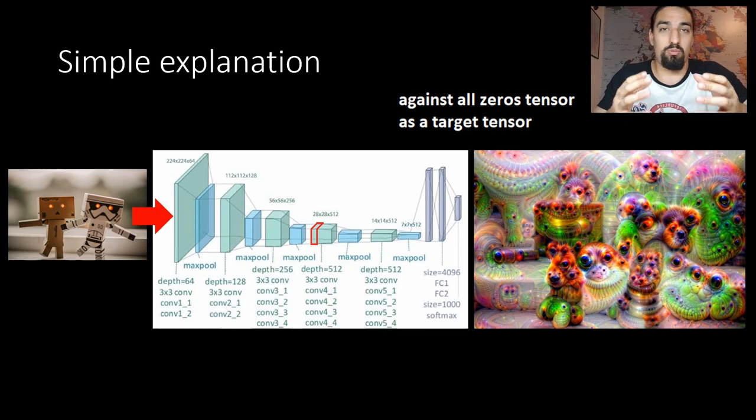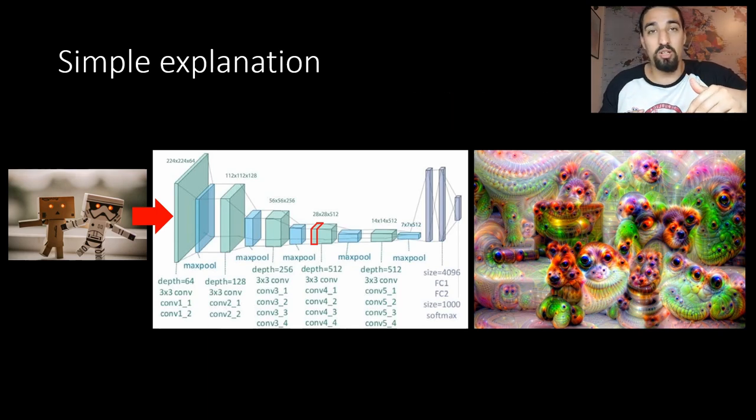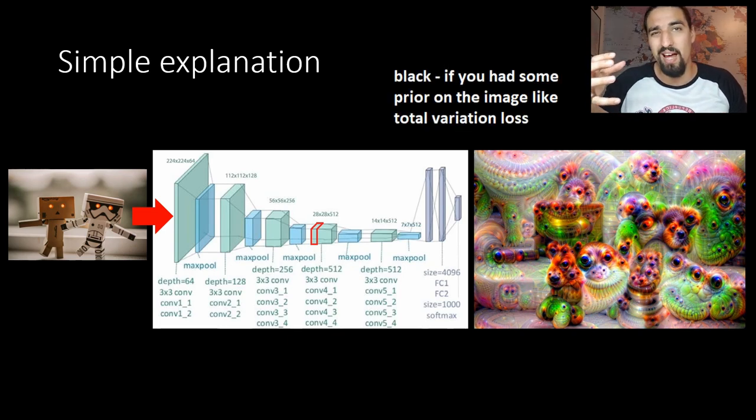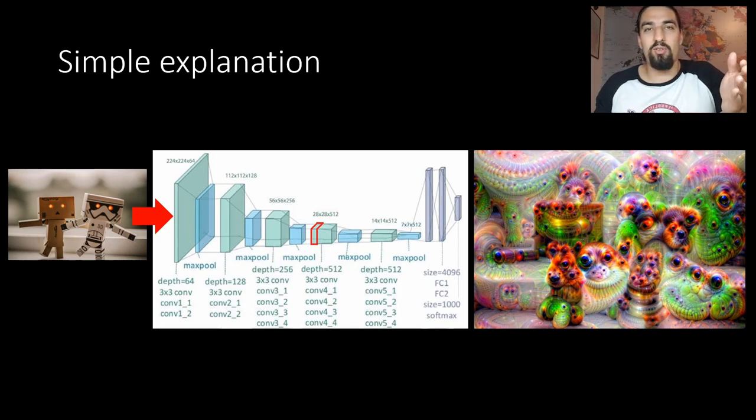For example if you took a simple L2 or MSE loss on those activations and you wanted to do a classical procedure that's minimization, you would end up with the input image becoming either black or more probably just some random noise image. On the other hand, if you tell it to maximize instead of minimize those activations you get the DeepDream results that we're familiar with.